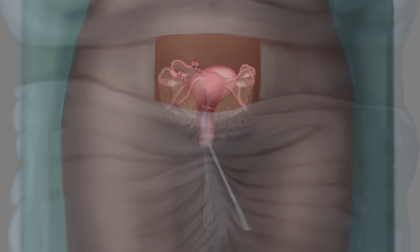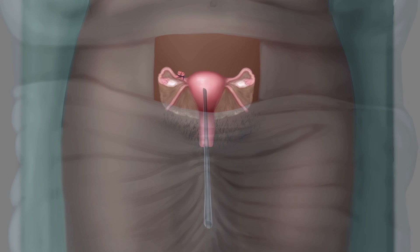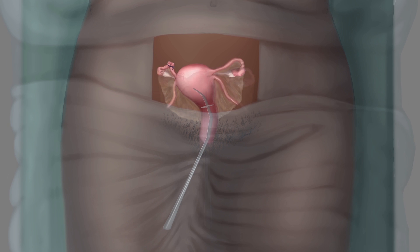Gently rotate the uterine elevator to the other side and repeat this procedure on the other fallopian tube.